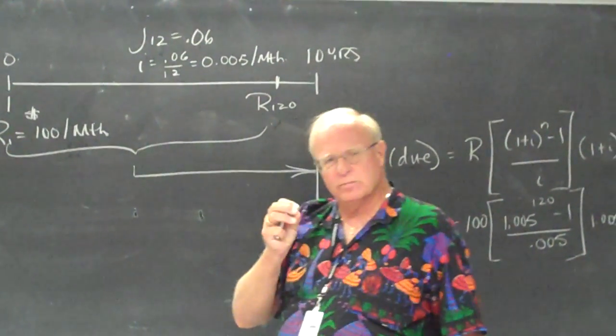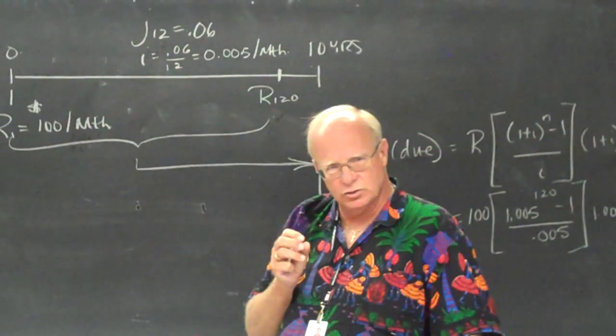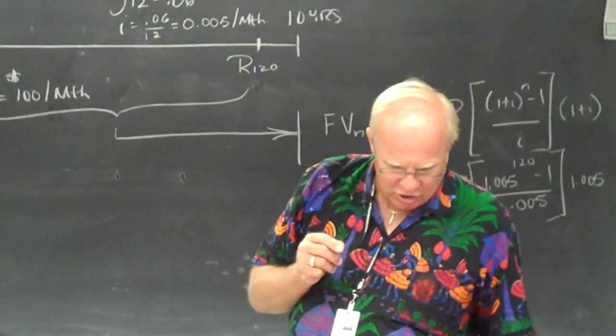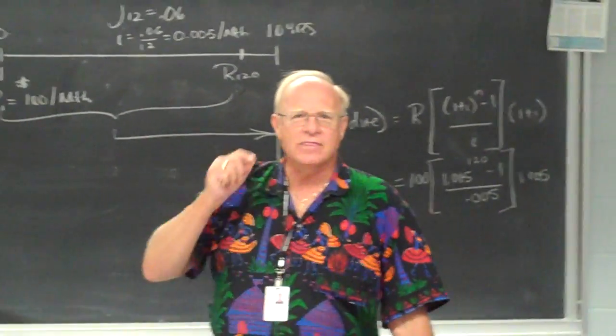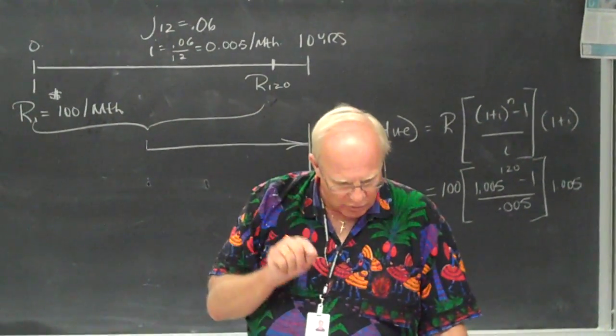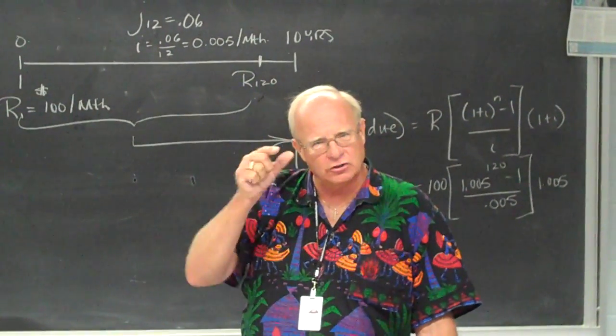Now, you have to remember to put it on begin mode. That's the only trick when you're doing an annuity due. In order to do that, you go second function payment, and then second function, and the word enter on the top row of the calculator. That's a toggle switch.